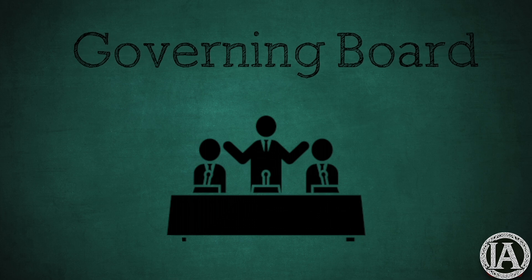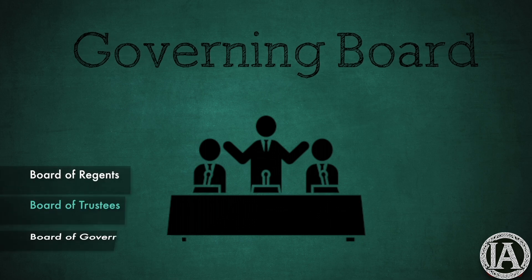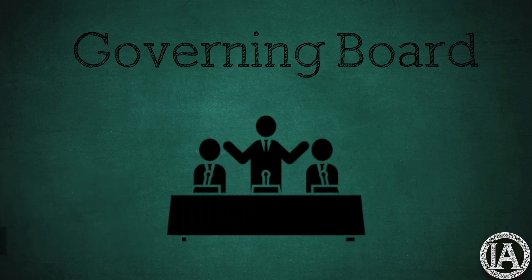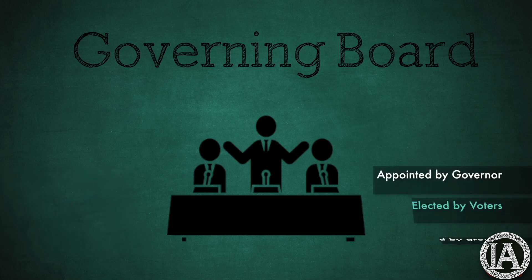Typically, this body is referred to as the Board of Regents, Board of Trustees, or the Board of Governors. Members serving on public boards may be appointed by the governor, elected by voters, or chosen by the groups they represent.